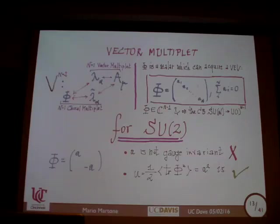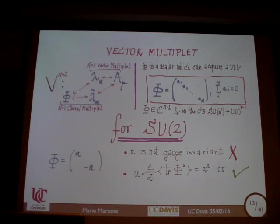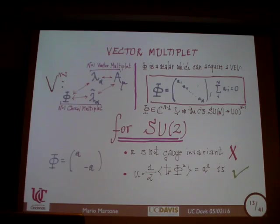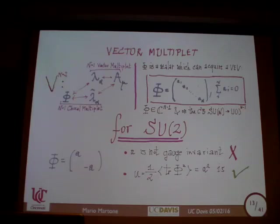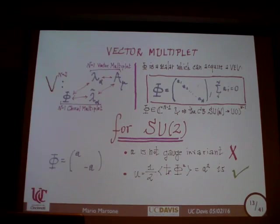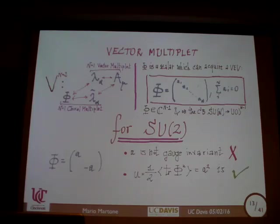One important reason why the Coulomb branch is preferred for studying these theories is that you can study all possible relevant deformations you can turn on. All the relevant deformations of N=2 SCFTs preserve the Coulomb branch — there is no relevant deformation that lifts it. Whereas if you turn on a mass term, you lift part of the Higgs branch. I'll use U = a^2 — the reason is a Z_2 gauge transformation — to parameterize the one complex-dimensional Coulomb branch. Physically, once you turn on a VEV, the gauge group is broken from SU(2) to U(1).